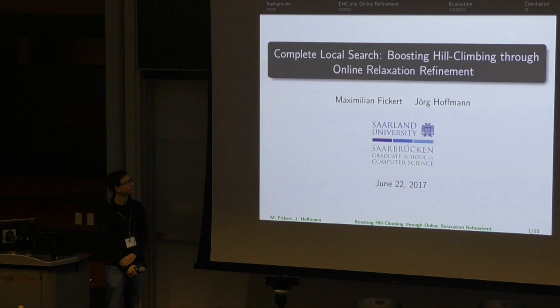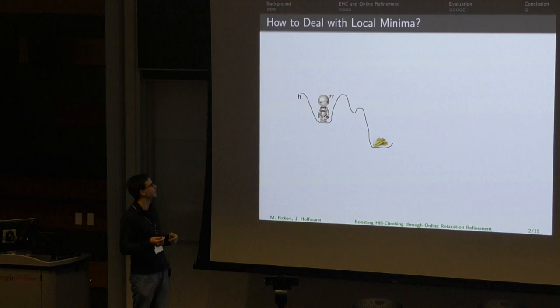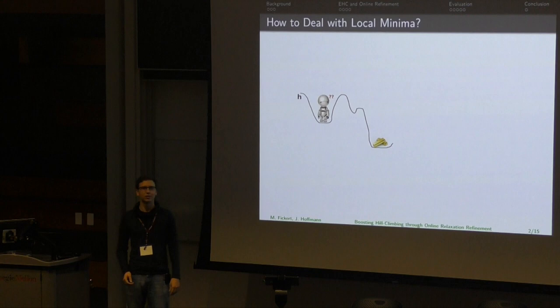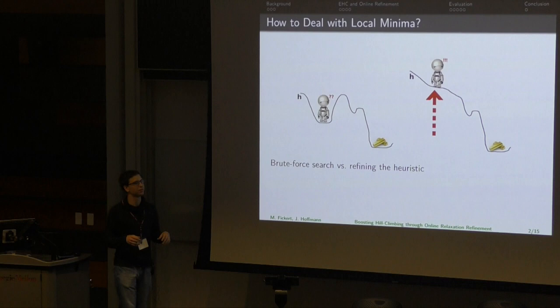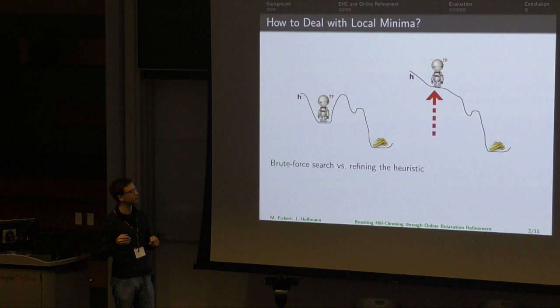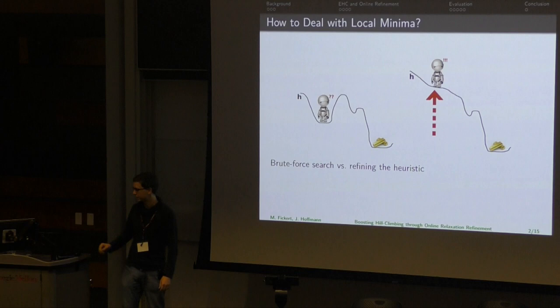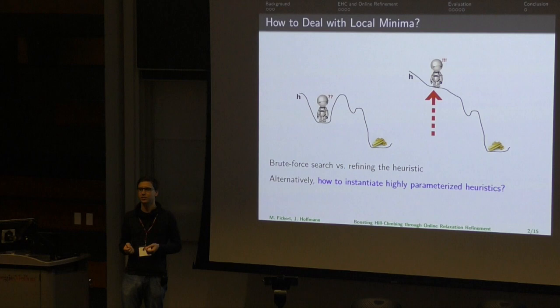If you're doing a hill climbing style of search, you can walk into a local minimum, and the question is, what do you do then? In fast hill climbing, for example, you would do a breadth-first search until you find a state with a better heuristic value. But what we want to do instead is, if you have a heuristic with some sort of refinement operation, you can refine the heuristic in the local minimum, thereby increase the heuristic value there, and remove the local minimum from the search space topology. A different view is: if you have a highly parameterized heuristic, should you instantiate it before search, or should you refine it when you really need it during search?